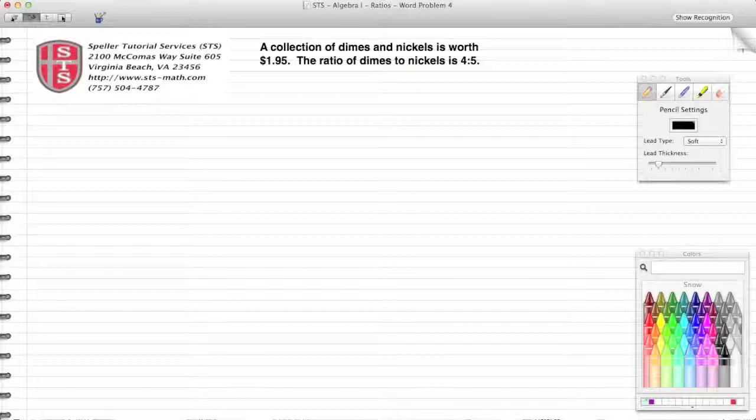Welcome back to Speller Tutorial Services. Today we're going to continue our talk on ratios and work with this word problem: A collection of dimes and nickels is worth $1.95. The ratio of dimes to nickels is 4 to 5, and we need to find out the number of dimes and the exact number of nickels.